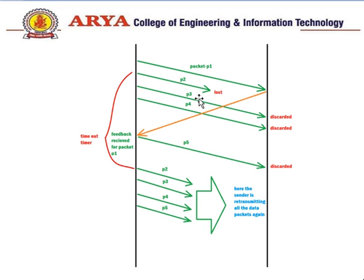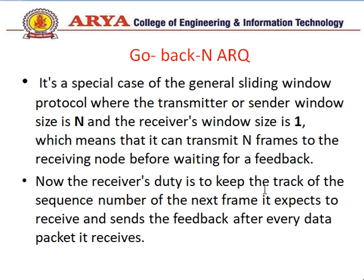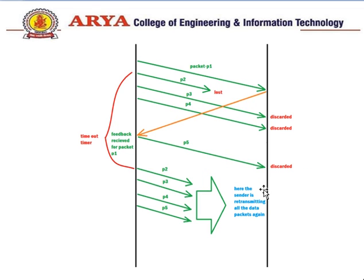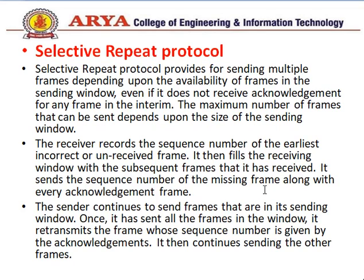With the diagram, the sender sends packets P1, P2, P3, and P4. Suppose P2 was lost — after receiving acknowledgement for P1, it will retransmit all frames from P2 onward: P2, P3, P4, and so on. As the name indicates, Go-Back-N means we need to go back to the last acknowledged frame and resend all subsequent frames.